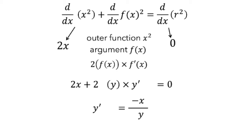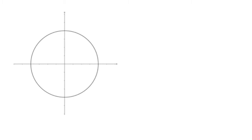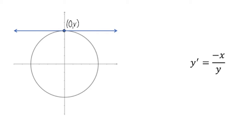Let's try this out on the circle. We just figured out that the slope of the tangent line to the circle is given by the formula negative x divided by y. So how about the tangent line at the point with coordinates 0, r? Our formula says that the slope of this tangent line should be negative 1 times x coordinate, 0, divided by y coordinate, r, which equals 0. And this computation matches what we can see in the graph, that the tangent line should be horizontal, and the slope of a horizontal line is 0.